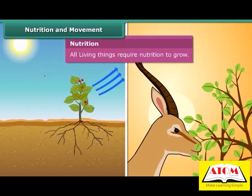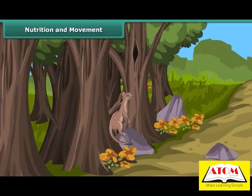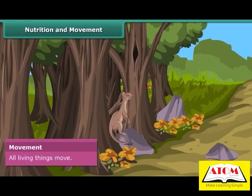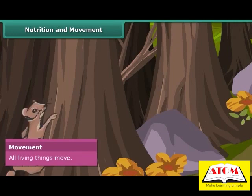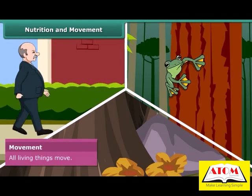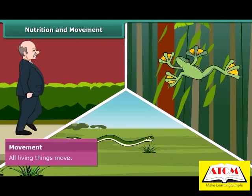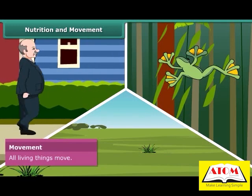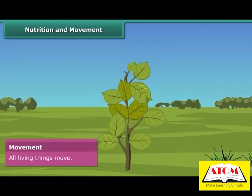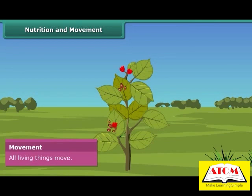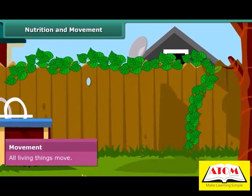Another important characteristic of living organisms is movement. All living things move by their own accord. People walk, frogs leap, snakes crawl — these are all actions of movement. Similarly, plants also make some movement but they do not change their place. For example, goat climbers move towards their support.